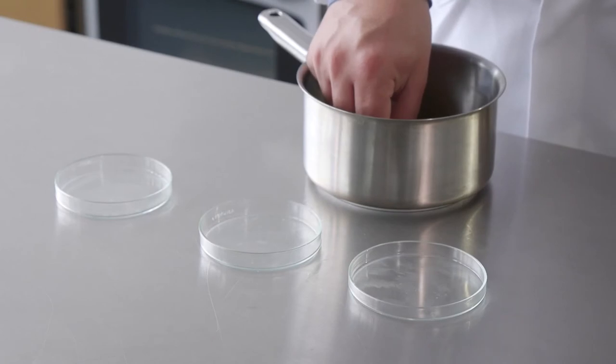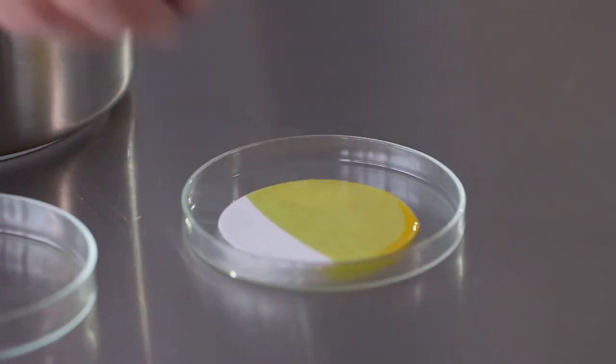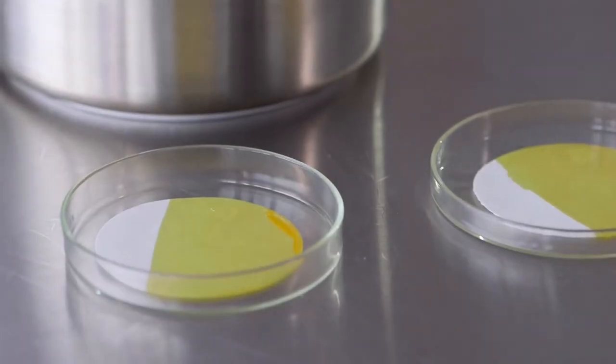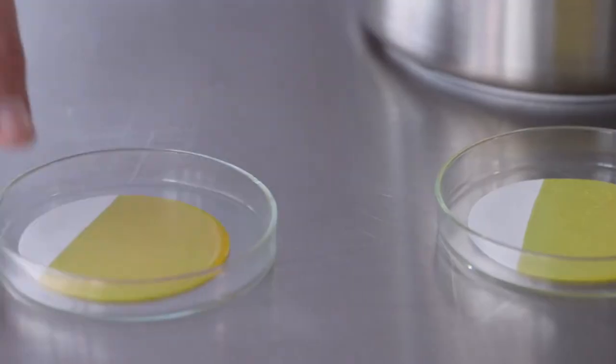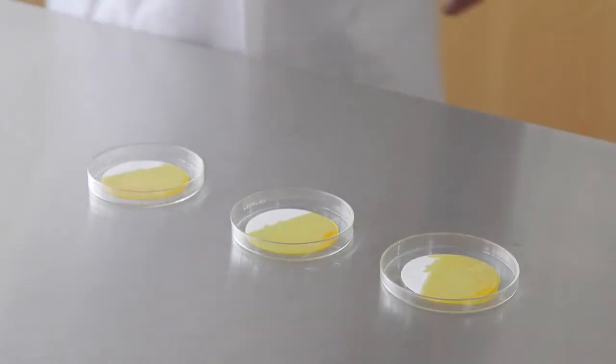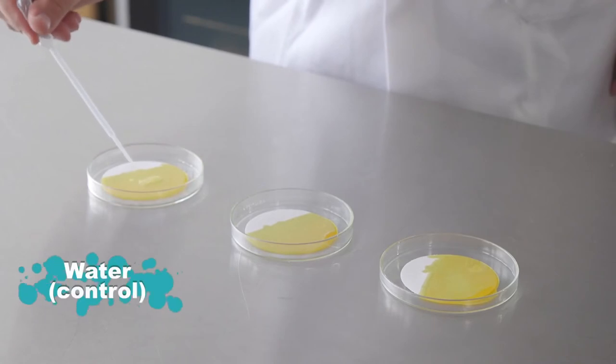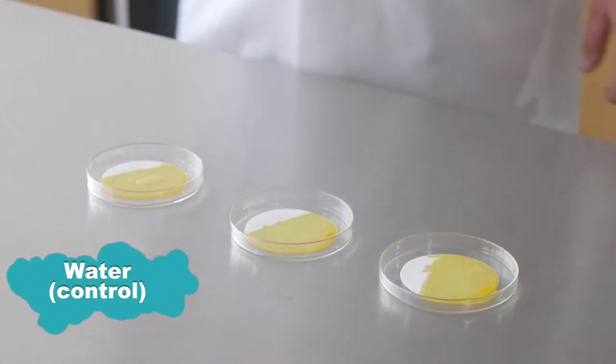Leave these where they are for four to five days. The second experiment will look at the effect of chemicals on this process. As before, prepare some discs of beta-carotene colored fat and place them in petri dishes. This time, treat the dishes as follows. One, just with water, which is our control.